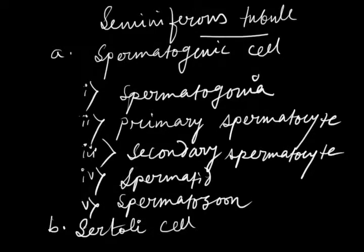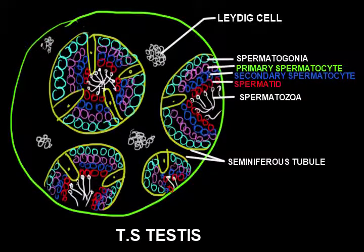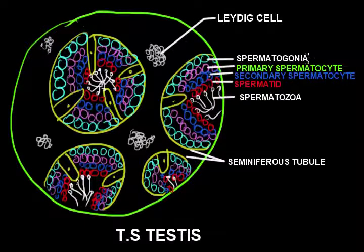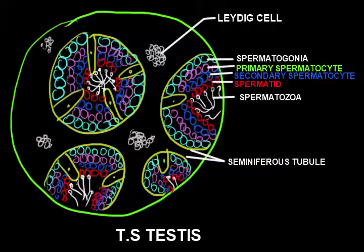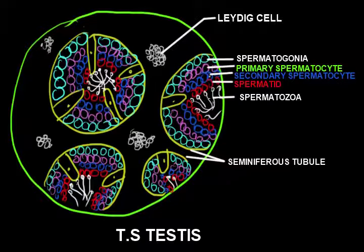Looking back at the structure of the testes, you may observe these cells. These are the spermatogenic cells arranged in layers. The outermost layer contains cells known as spermatogonia, which are considered the stem cells of the testes that help in the development and formation of sperm or spermatozoa. The next layer is composed of primary spermatocytes, the third layer of secondary spermatocytes, the fourth layer of spermatids, and finally the spermatozoa. All of these together are known as spermatogenic cells.